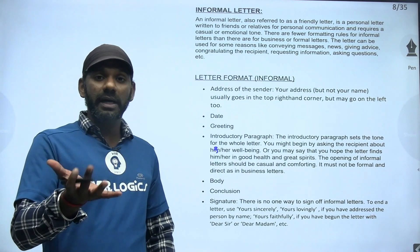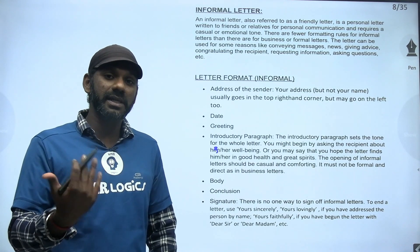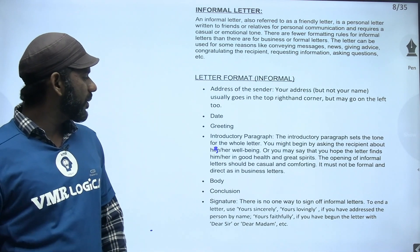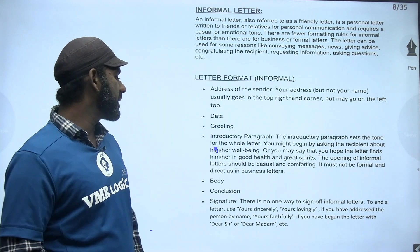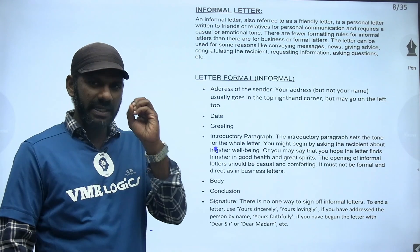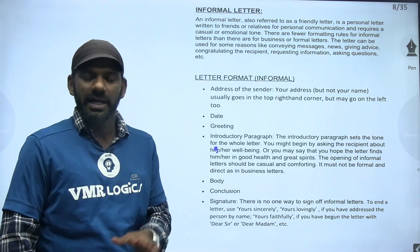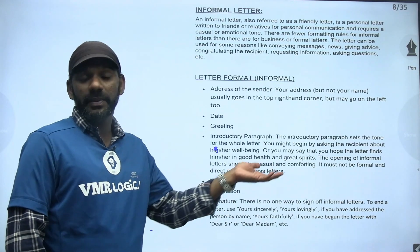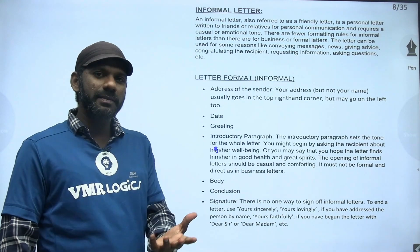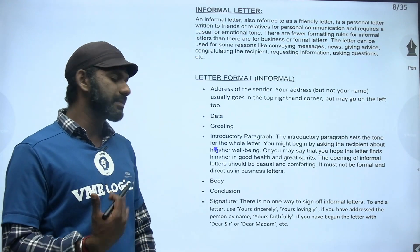It must not be formal and direct as in business letters. In official letters we are very formal and very direct — we move straight to the issue and never ask the director of a company how they are or whether their family is good. All those things will never happen in an official letter, but they should happen in an informal letter — just to please that person and make them aware that we are concerned.